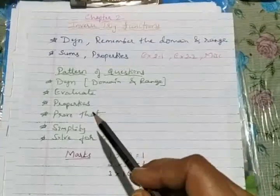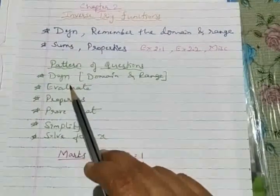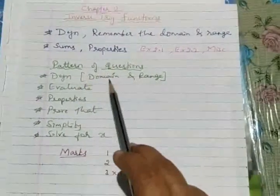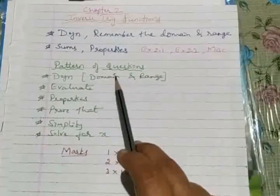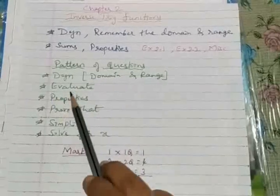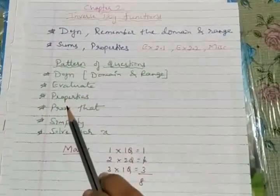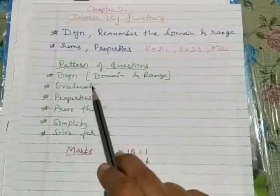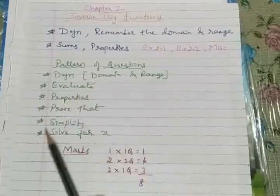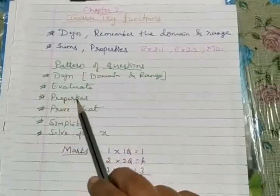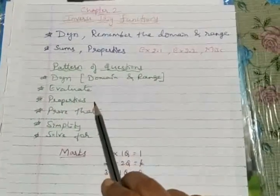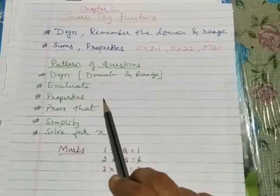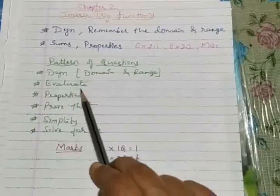So that part I would like to highlight here, and the first part as this is going to mention it's a domain in the range definition. One more question definitely we can expect on this. Followed by we have evaluate, this one more question you can set your mind, evaluate. Followed by that we're going to ask you the properties. Definitely property either in two mark slot or in three marks, one question is always asked on the property.